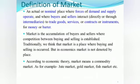A market is a system or arrangement by which buyers and sellers of a commodity are able to interact and communicate with each other to determine the price and the quantity to be bought and sold. There are two types of market.